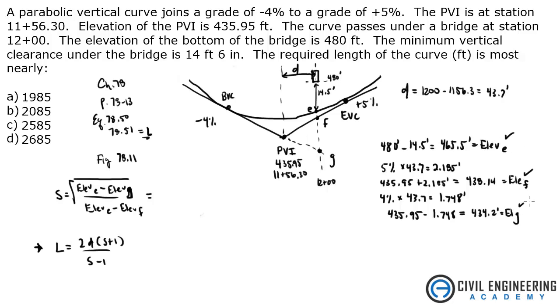We've got E, F, G. Now we can go plug it all into here. We're going to take the square root of 465.5 minus the elevation of G, which was 434.2, all divided by 465.5 minus the elevation of F, 438.1. What does that give me? I get 1.07 for S. Now all we need to do is plug that into this guy.